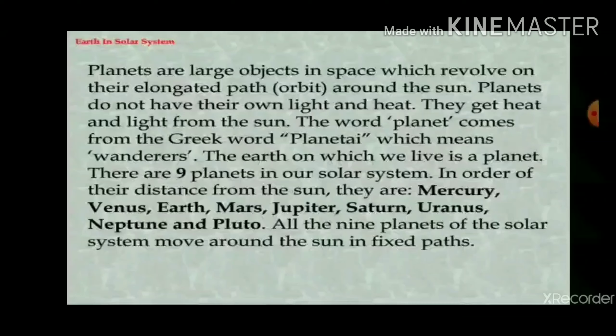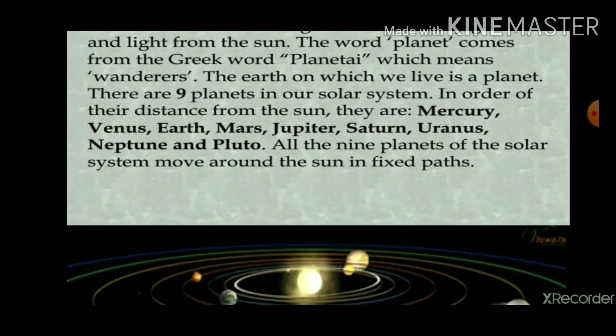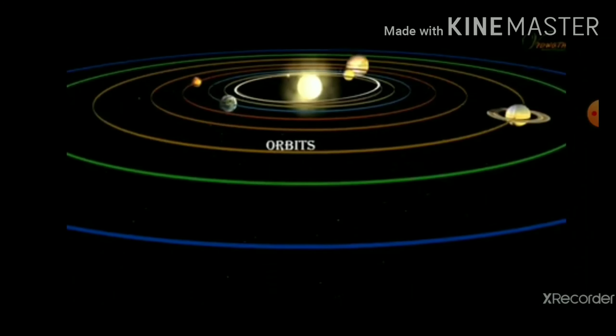There are nine planets in the solar system. In order of their distance from the sun, they are: Mercury, Venus, Earth, Mars, Jupiter, Saturn, Uranus, Neptune, and Pluto. All nine planets of the solar system move around the sun in fixed paths. These fixed paths are called orbits.